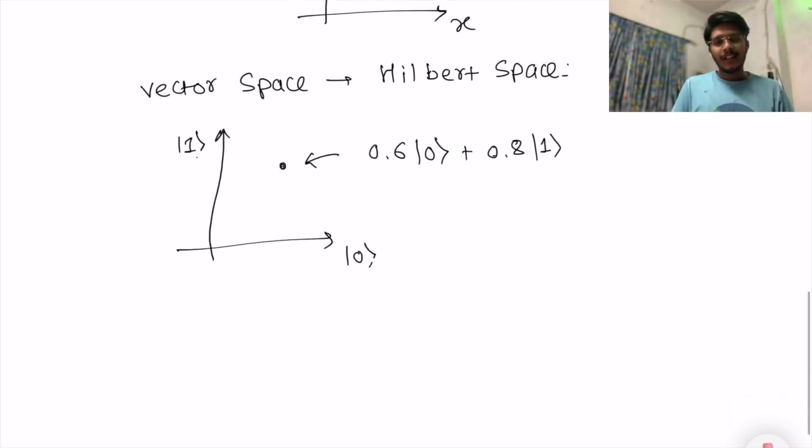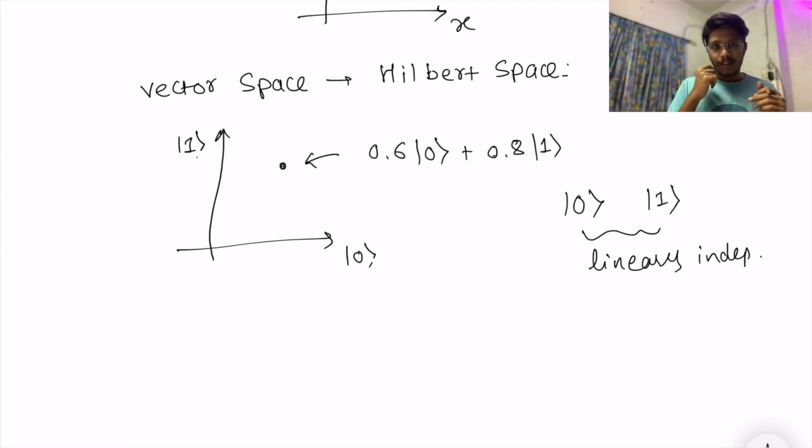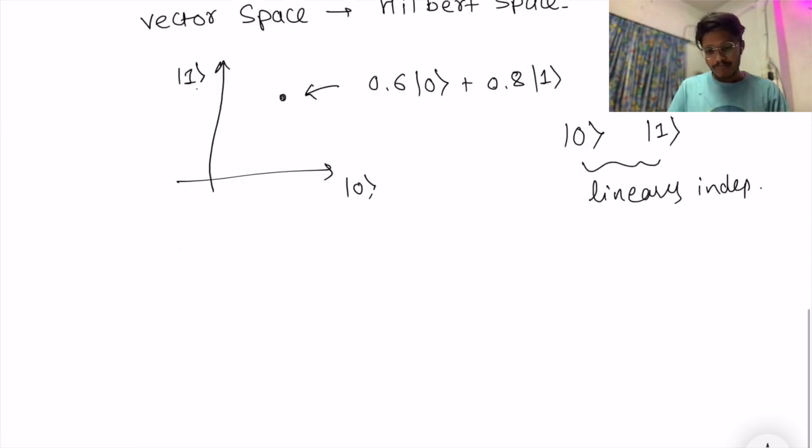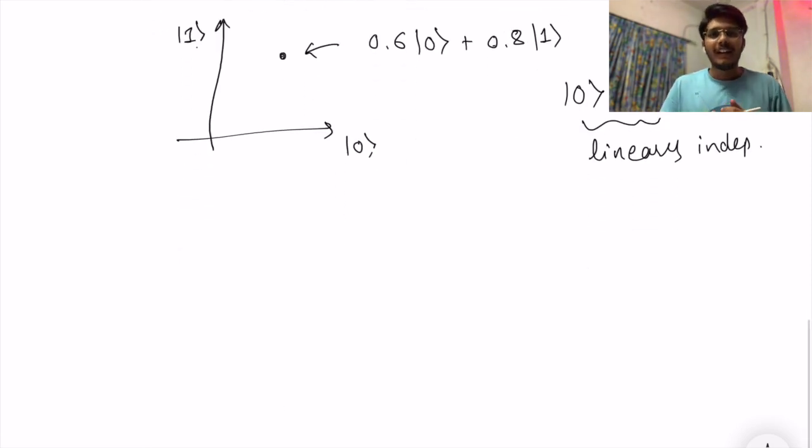In Hilbert space, all these basis vectors are linearly independent of each other. This is a property of any basis in any particular space.